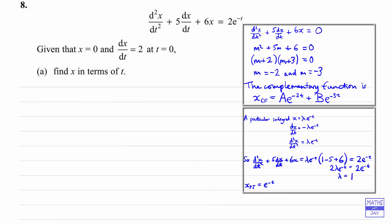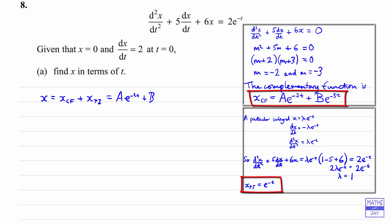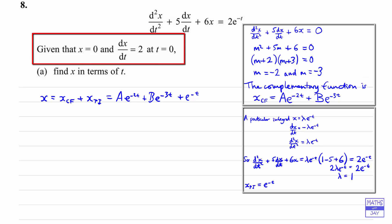Now we've done the hard work, we can just write down what the solution is. The solution is the complementary function plus the particular integral, so that's equal to a·e^(−2t) + b·e^(−3t) + e^(−t). We can see that we've got two constants that we haven't yet found, but we have been given some initial information. In the second line of the question we've been given that x = 0 and dx/dt = 2 at t = 0, so using that information will enable us to find a and b.